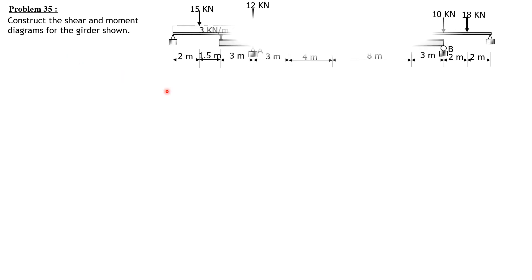Let's construct the shear and moment diagram for a girder. Construct the shear and moment diagram for the girder shown. These are the loads. Let's mark these supports as one, two, three, four, five, and six.